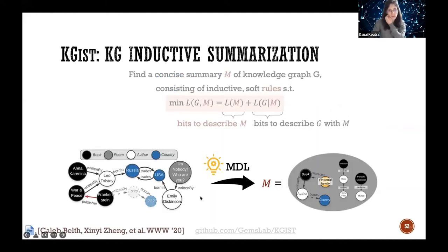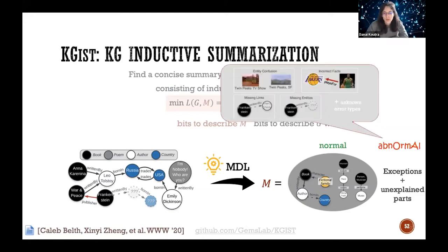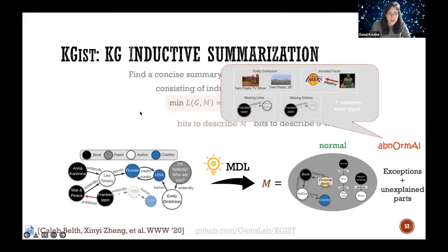Using this formulation, we can get a set of rules that describe what is normal in the graph, but also find what is abnormal — any exceptions or unexplained parts that can be used for identifying different types of errors: entity confusion, missing links, incorrect facts, and identifying where information is missing in a knowledge graph.